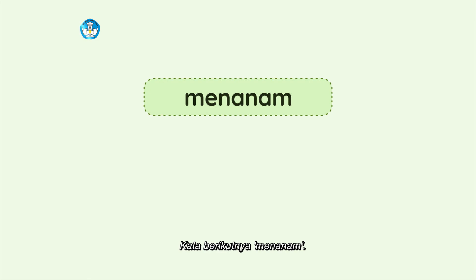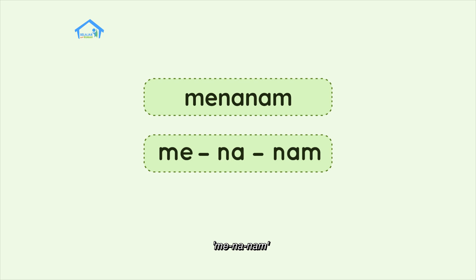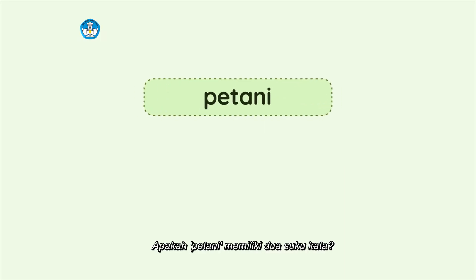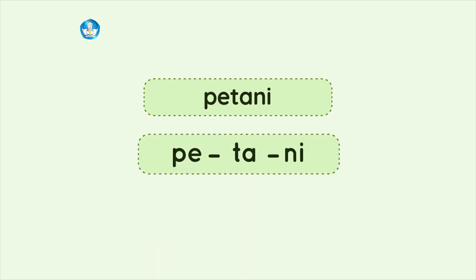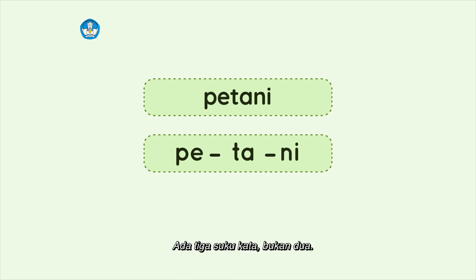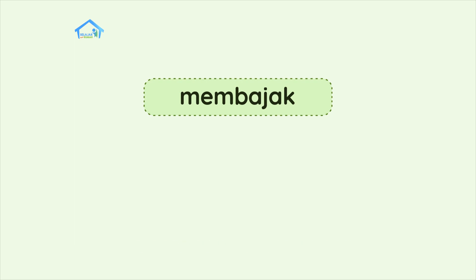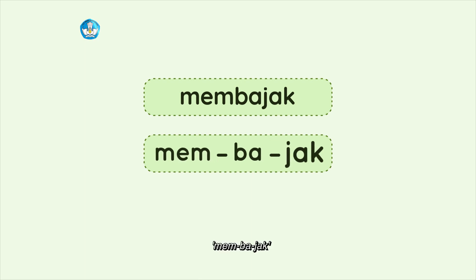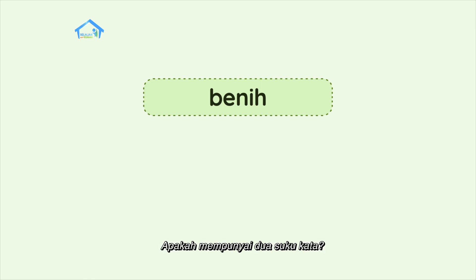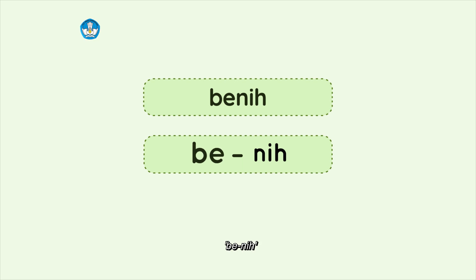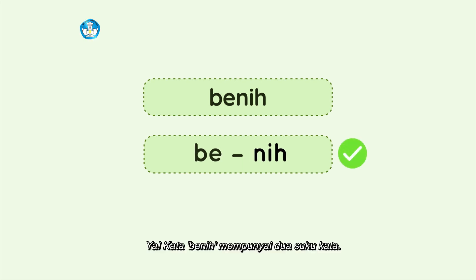Kata berikutnya, menanam. Apakah menanam mempunyai dua suku kata? Me-na-nam — ada tiga suku kata, bukan dua. Kata berikutnya, petani. Apakah petani memiliki dua suku kata? Pe-ta-ni — ada tiga suku kata, bukan dua. Kata berikutnya, membajak. Apakah membajak mempunyai dua suku kata? Mem-ba-jak — ada tiga suku kata, bukan dua. Lalu kata benih. Apakah mempunyai dua suku kata? Be-nih — ya, kata benih mempunyai dua suku kata.